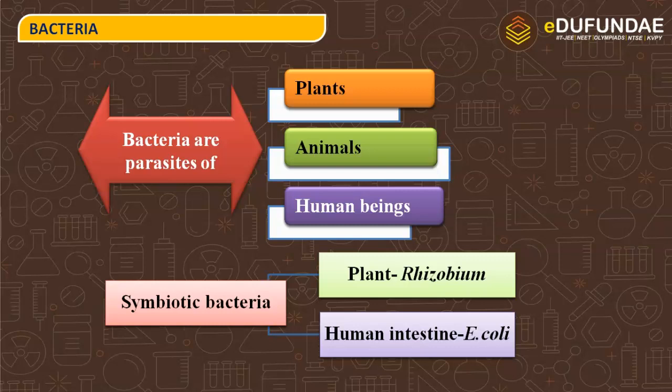In a symbiotic association, bacteria also provide benefit to the host. For example, Rhizobium in plants derives nutrition from the plant body but also fixes nitrogen for the plant. Similarly, E. coli is a beneficial bacteria for the human gut, while the human gut provides shelter and nourishment to the bacteria. This mutual benefit is a symbiotic relationship. Bacteria can also be purely parasitic and only cause harm to their host.